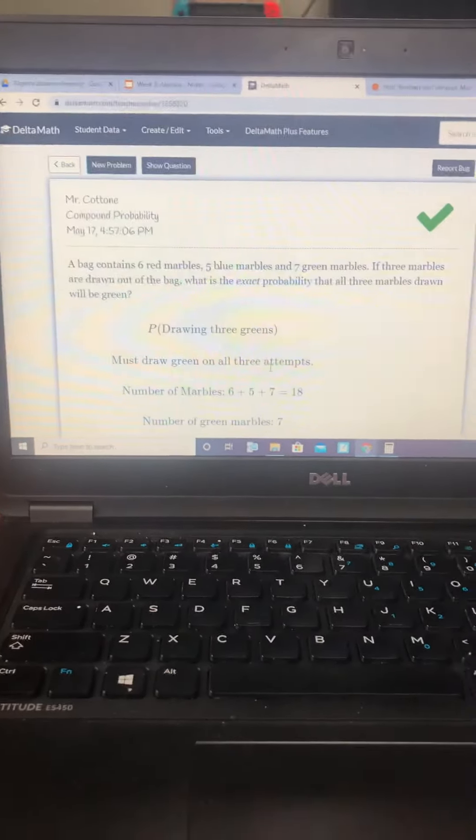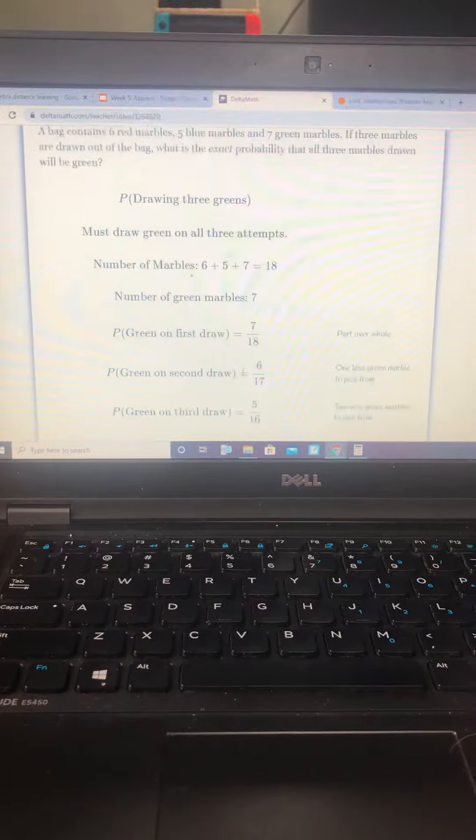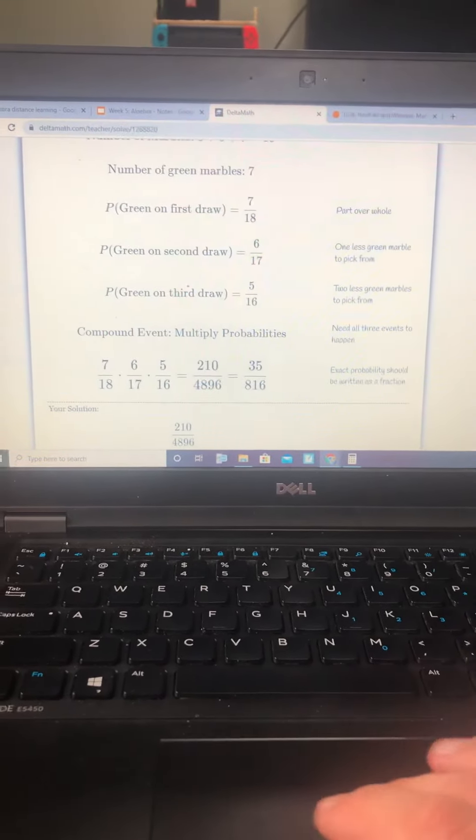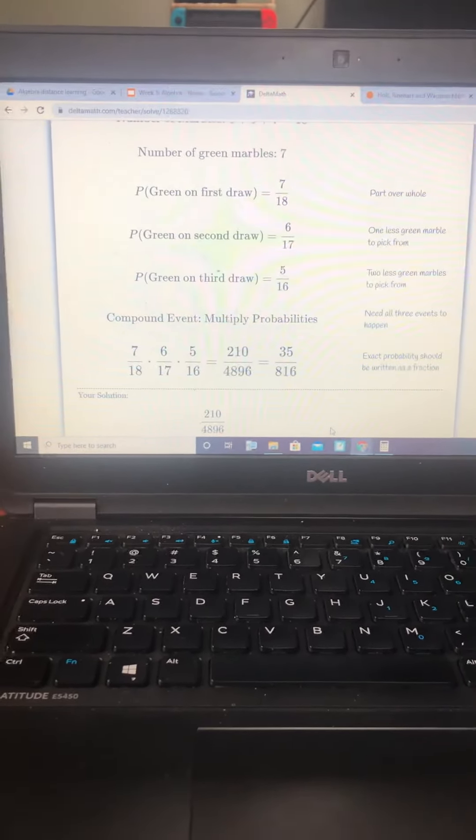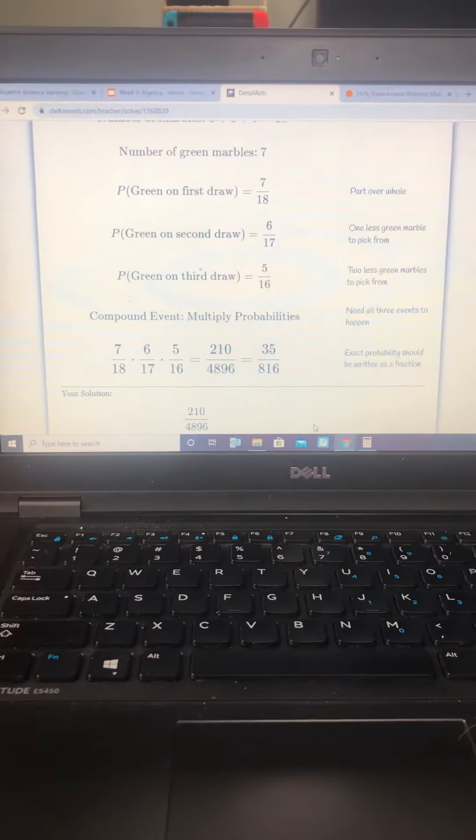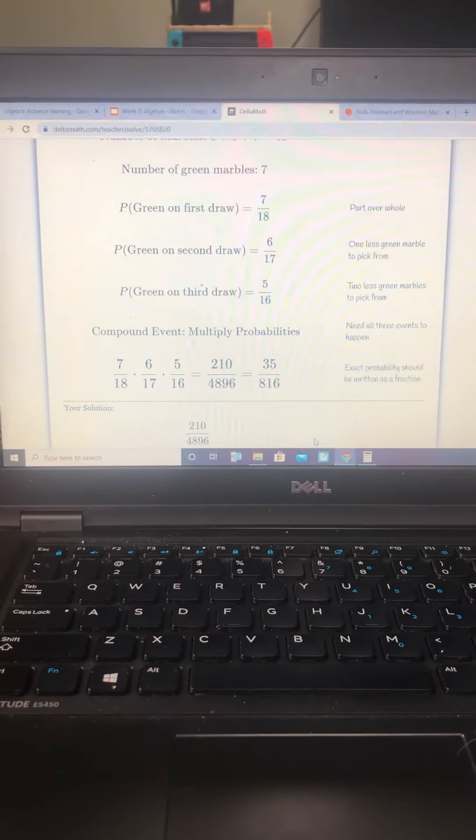And we are correct. And you can see their work is exactly as our work. It can reduce to 35 over 816, but we don't need to do that. We have an equivalent fraction.